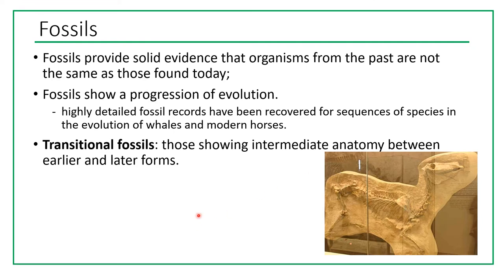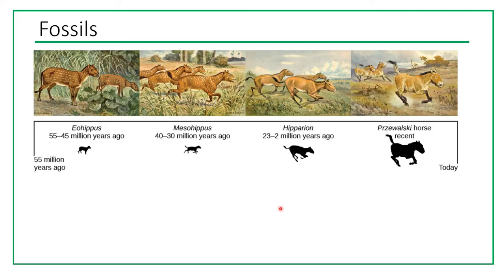Fossils provide solid evidence that organisms from the past are not the same as those found today, and they show a progression of evolution. Highly detailed fossil records have been recovered for sequences of species in the evolution of whales and modern horses. We also have transitional fossils — those that show intermediate anatomy between earlier and later forms. The fossil record of horse evolution goes back 45 to 55 million years ago, showing a gradual progression of change within horse species.